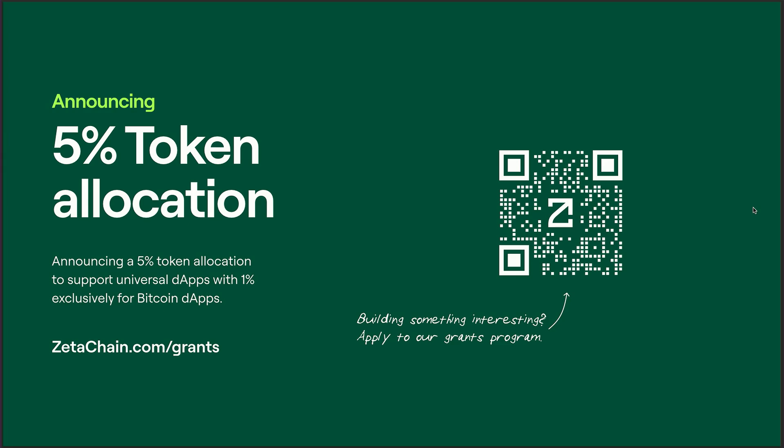The TSS private key is distributed amongst all of our observer signers — similar to how Thorchain does it with their private keys. For every custody address, that private key is distributed amongst all observer signers. The observer signers are running validators of all the connected chains, not just ZetaChain — they also run validators for Bitcoin and other connected chains. In total, we have 13 observer signers running validators of all our connected chains, including Bitcoin.